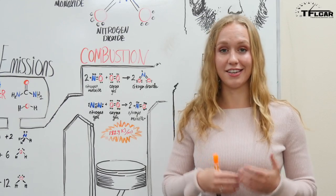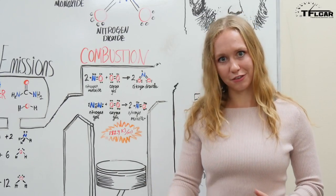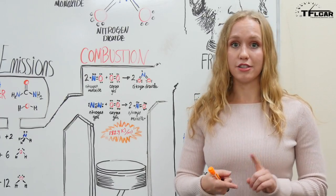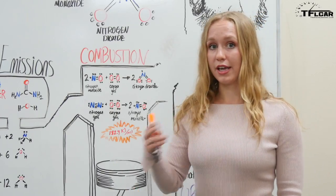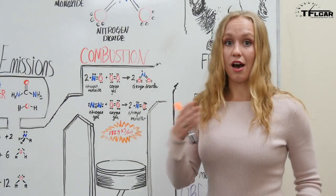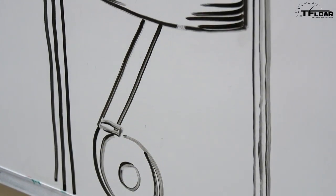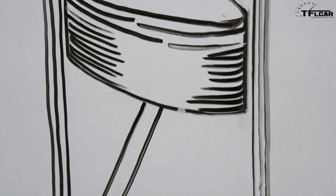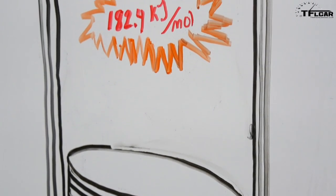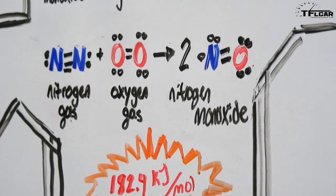NOx emissions are produced in diesel engines for a couple different reasons. The first being that diesel engines run at higher temperature and higher pressure than a comparable gasoline engine. So this first reaction where nitrogen gas and oxygen gas come together and react, that requires an input of 182.4 kilojoules per mole. So this energy barrier is a lot more easily overcome at high temperatures and high pressures.